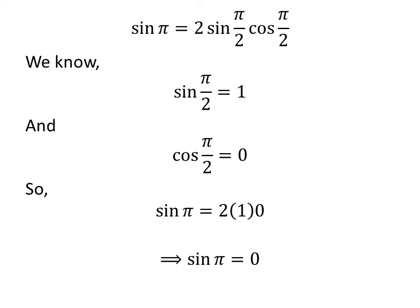As 2 times 1 times 0 is equal to 0, so sine of pi is equal to 0.